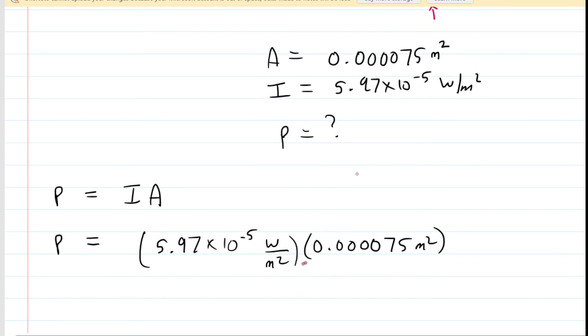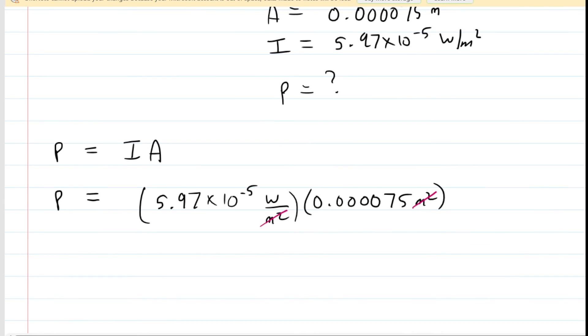And when we do that, you can see that the meter squared in the denominator there and the meter squared in the numerator there do in fact cancel out, leaving us with a standard unit of power of watts, and we get around 4.48 × 10^-9 watts as the answer to part B.